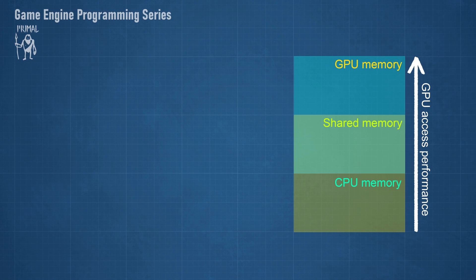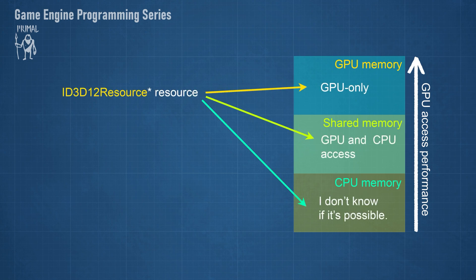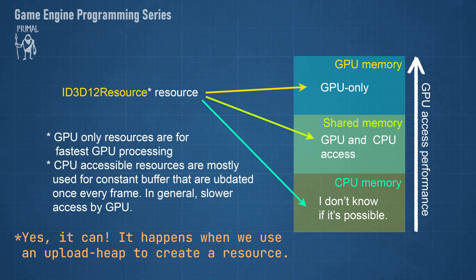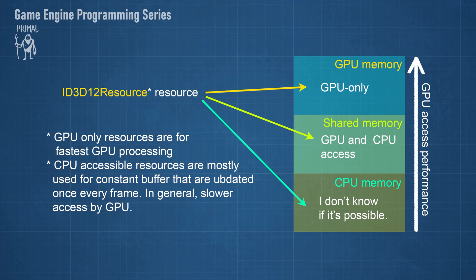When we create a resource, it will be created in one of these regions, although I'm not sure if a resource can be created directly in the system memory. The GPU-only resources are the fastest for GPU processing and should be preferred for any resource that's not going to be updated by the application. The CPU-accessible resources are slower to process and are mostly only used for a small set of data that needs to be updated for each frame.